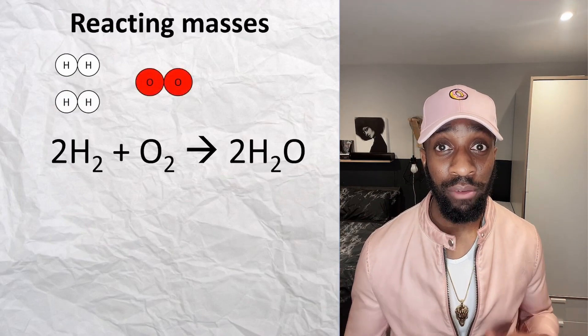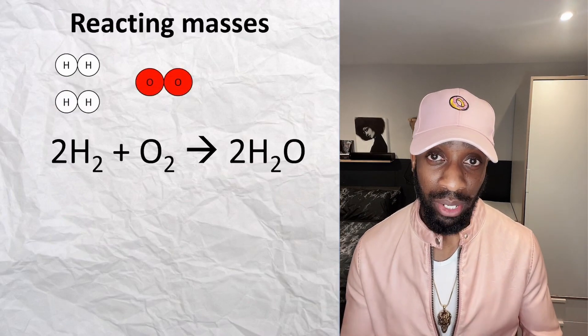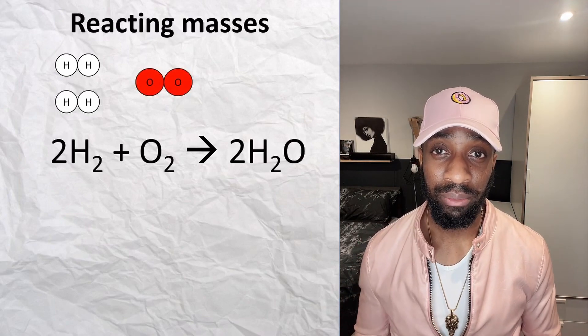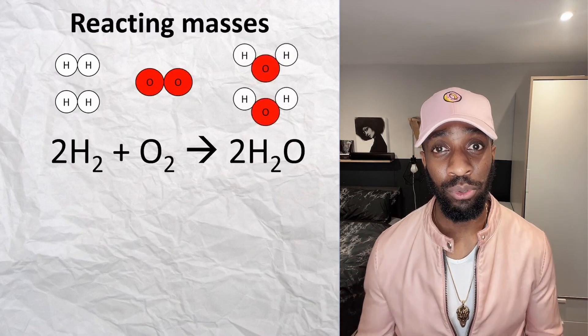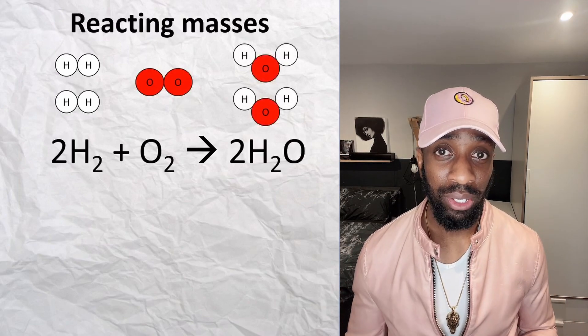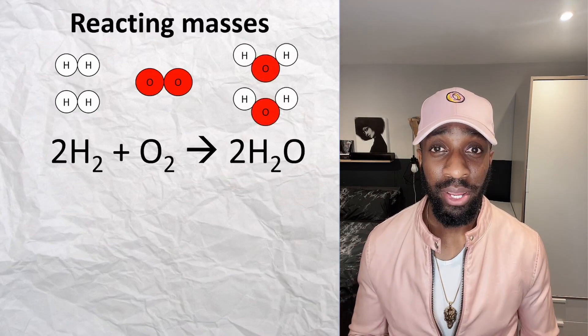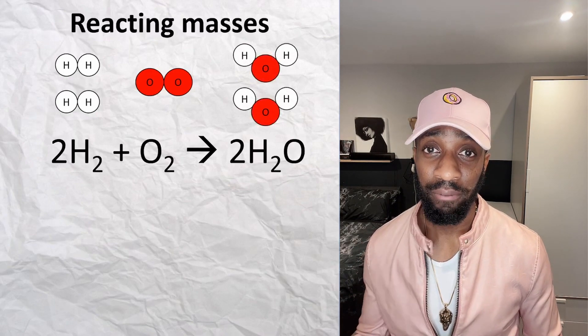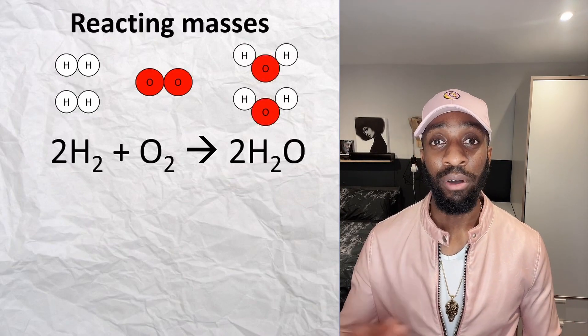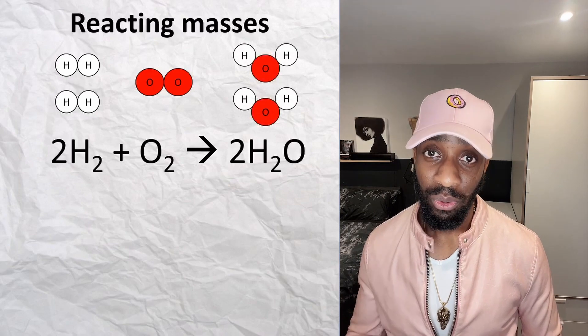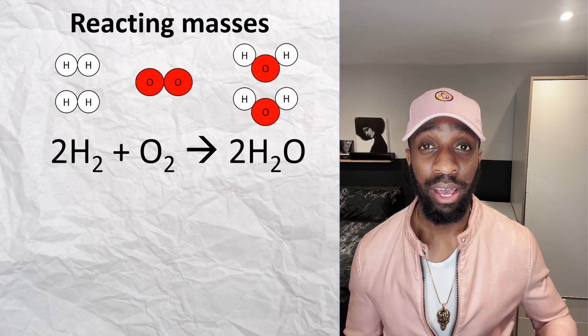We've got one mole of oxygen, and oxygen is a molecule that travels around in pairs, so we've got O₂, two oxygens joined together. That gives us two moles of water, which is two water molecules H₂O. We can see this equation is balanced because we've got four atoms of hydrogen on the left and on the right, and two atoms of oxygen on the left and right as well.